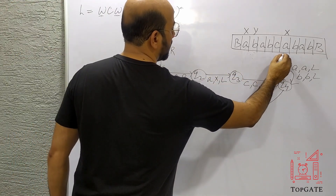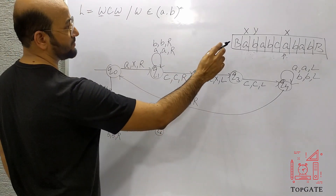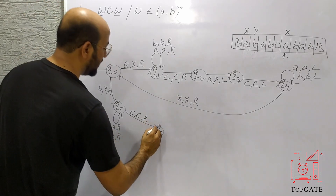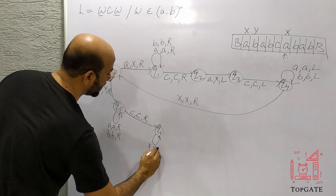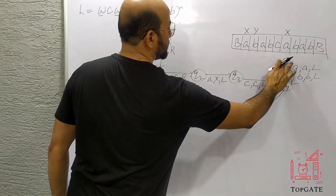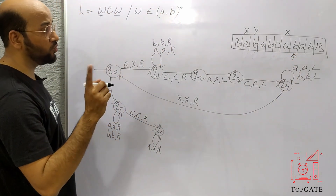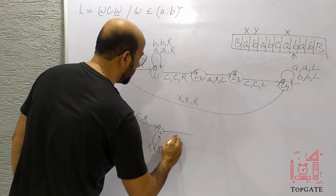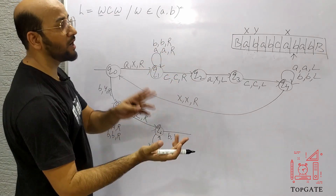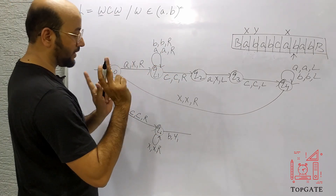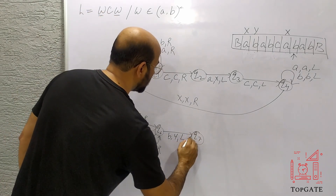The pointer will now point to this X. At Q6 I should skip this X because after the X I will find a B. So I take a self loop: if you find X keep it as X and go right. This X is skipped and the pointer will now point to this B. This B has to be changed to Y. So the machine takes a move: if you find B change it to Y, then go left to Q7.